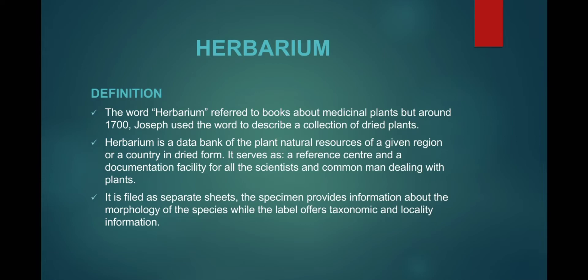The word herbarium was actually used for a book about medicinal plants, but it was used by Sir Joseph for dried plants. Herbarium means the storage or data bank of dried plants, and it is actually the protection of species. The specimen provides the morphological information, while the label attached with the specimen gives the taxonomic and locality information along with the person who collected the specimen.